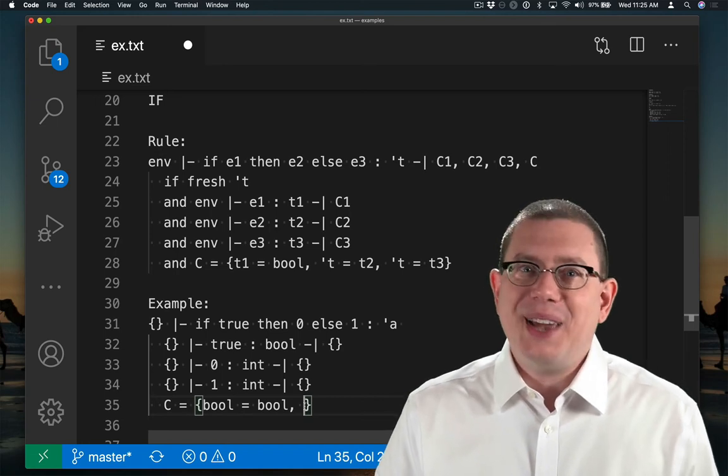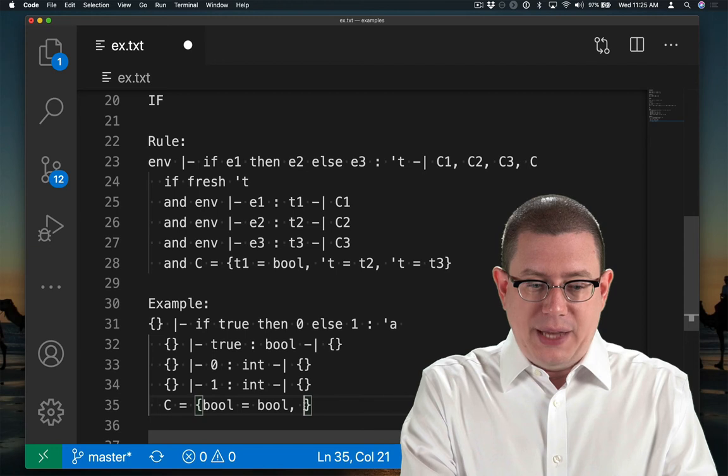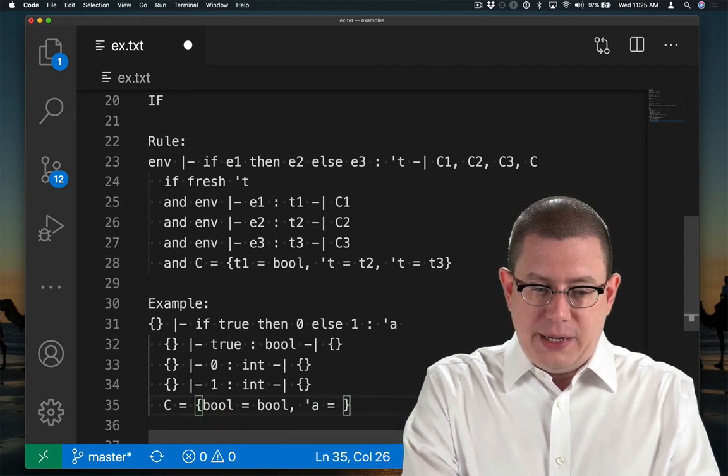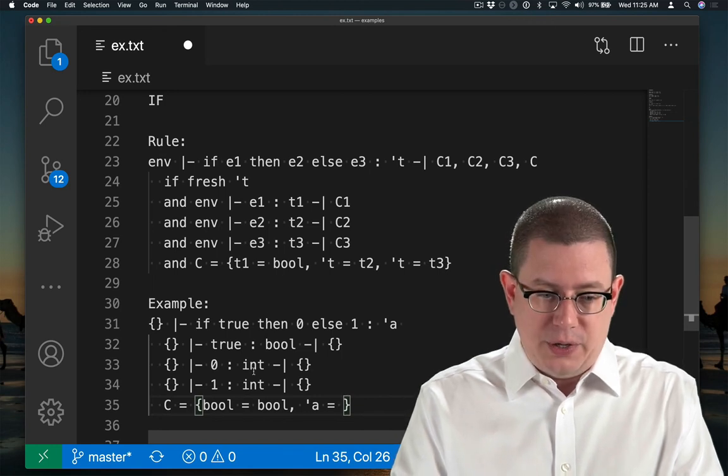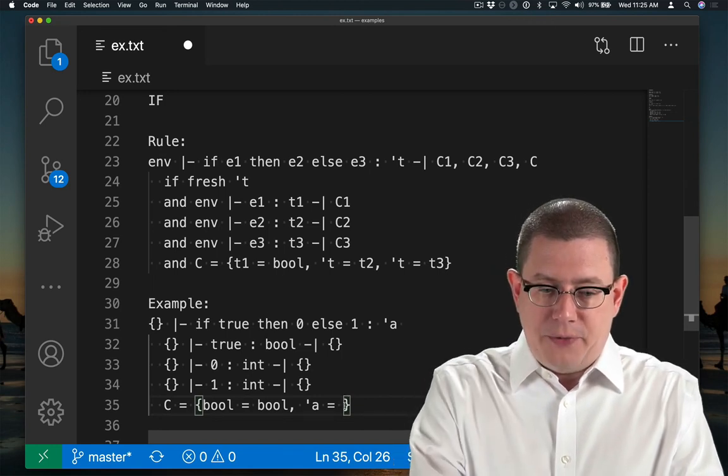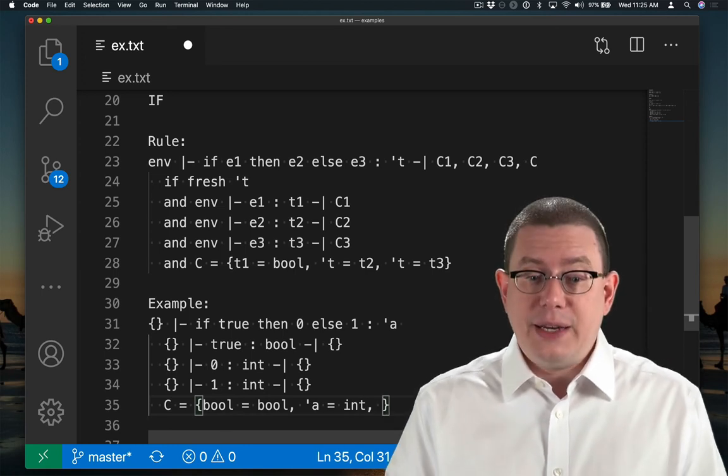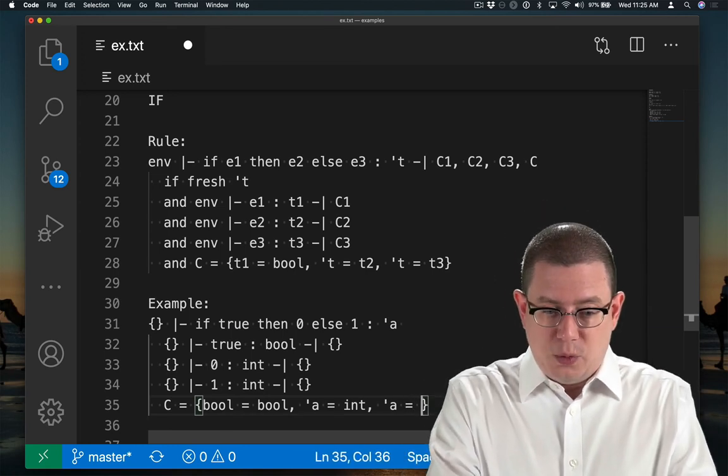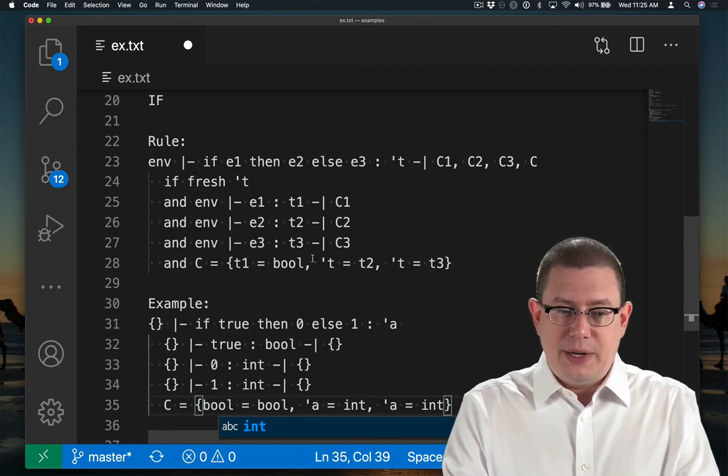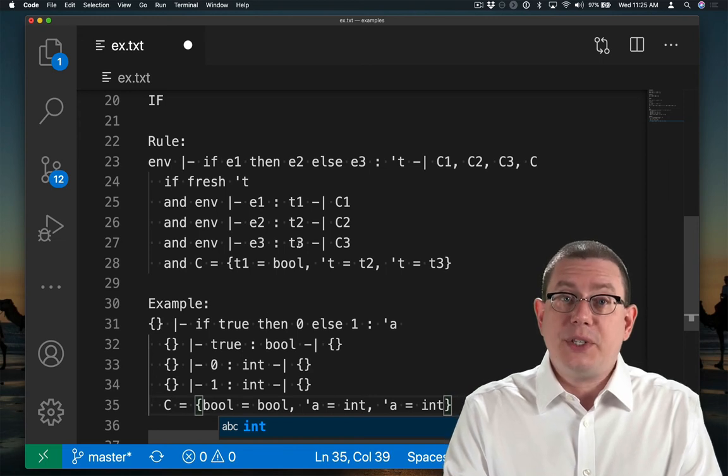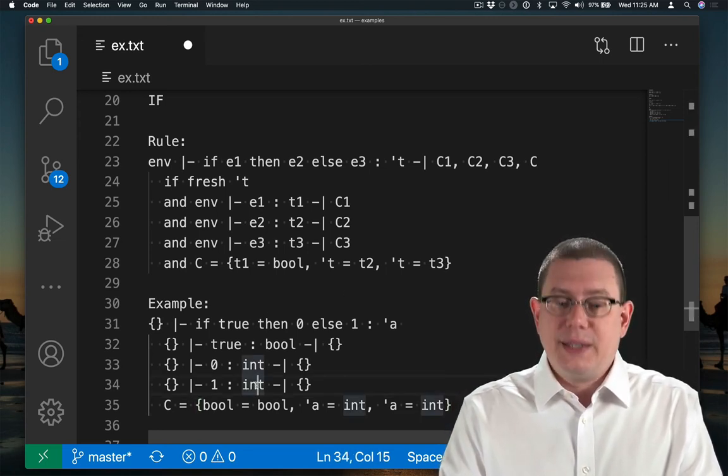Next, my type variable, alpha, needs to equal whatever type showed up as being inferred for the then branch. So that was int here. So I have to write alpha equals int. And after that, I need to again write alpha equals int. That comes from tau equals T3 here. So I need to say that my type variable equals the type that was inferred for the else branch, which is also int in this case.